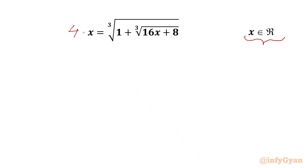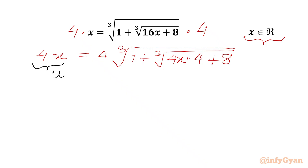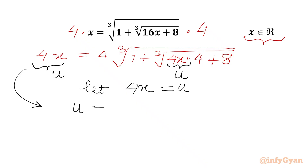I will multiply our equation both sides by 4. So we can write our equation 4x equal to 4 times cube root of 1 plus cube root of 16x. We can write 4x times 4 plus 8. Now we have 4x in LHS and 4x in RHS, so let us say 4x is equal to u. So we will write our equation in u: u equal to 4 times cube root of 1 plus cube root of 4u plus 8.